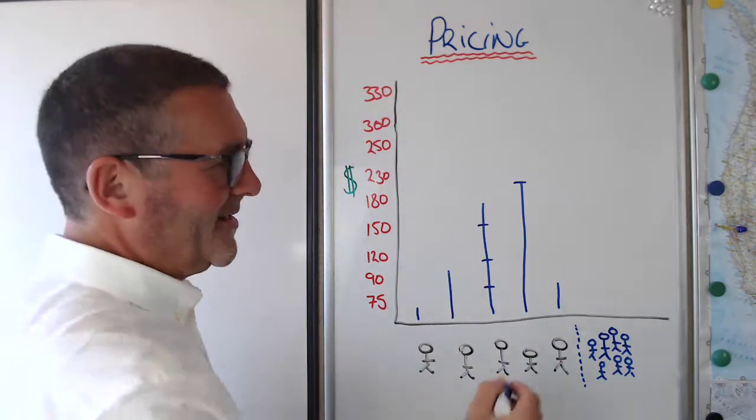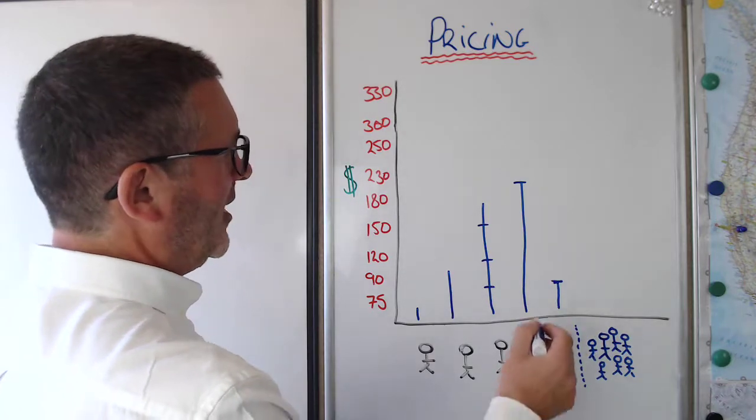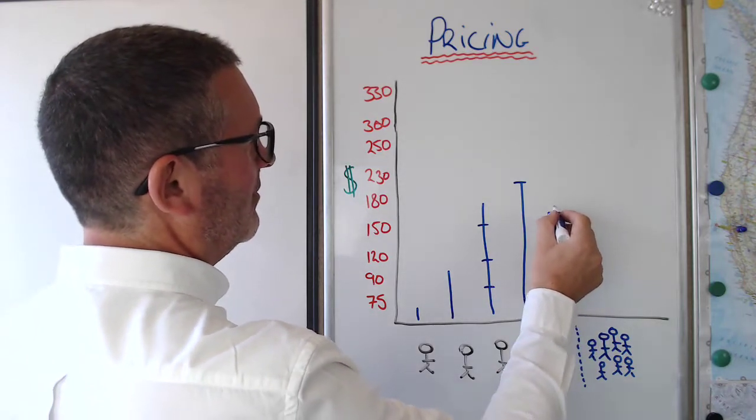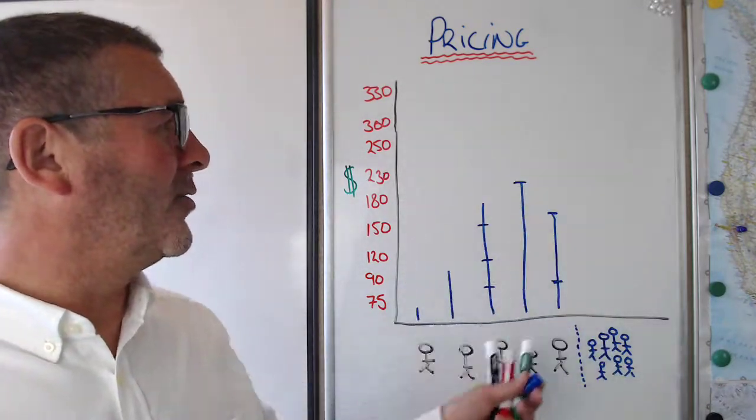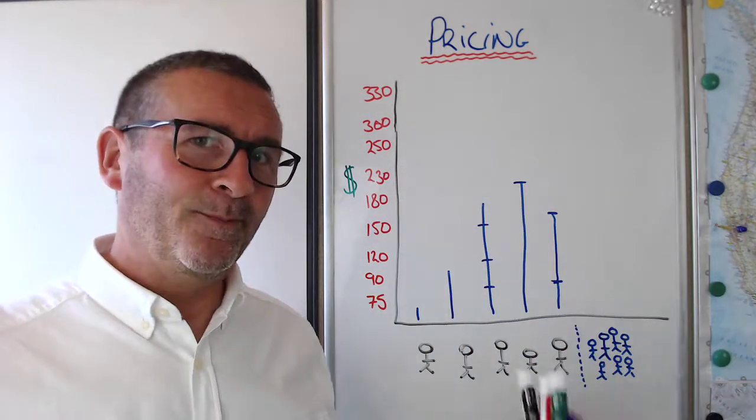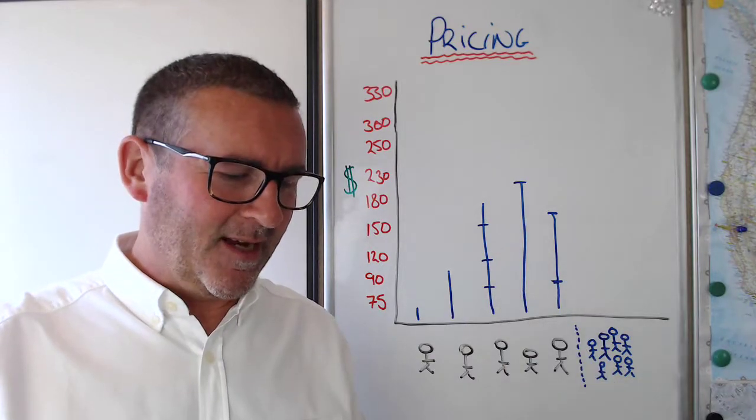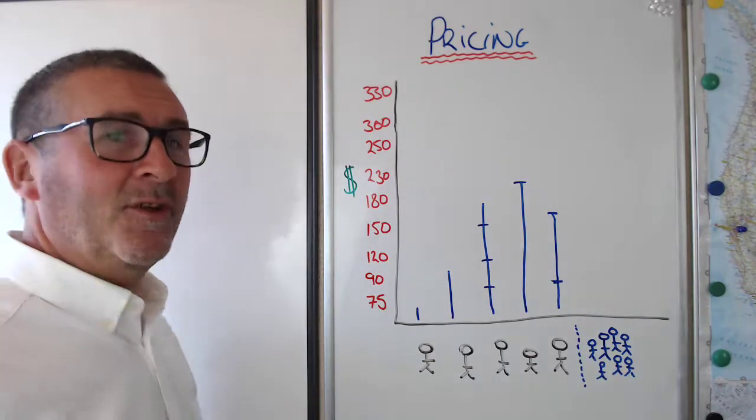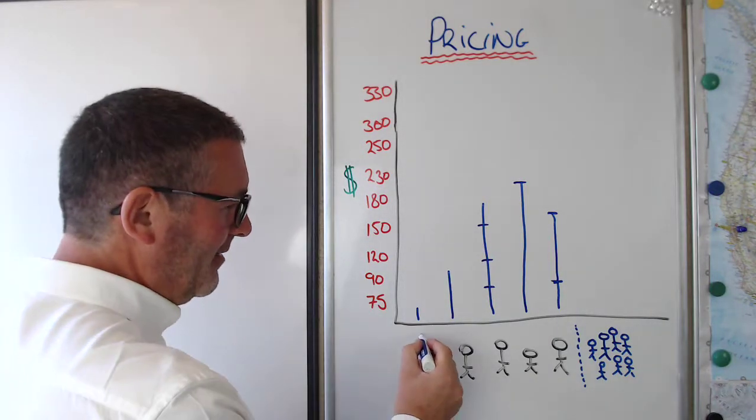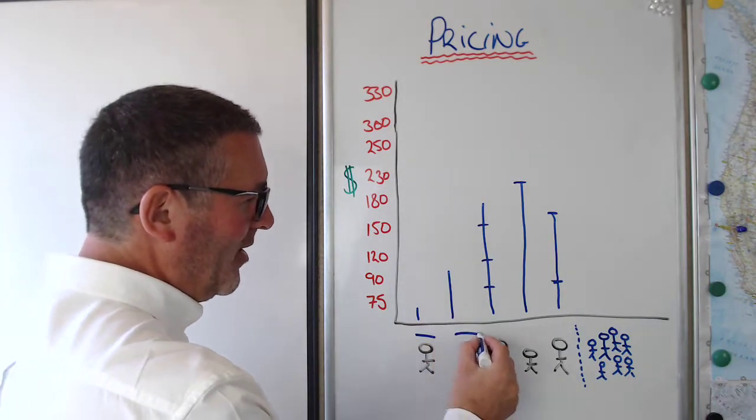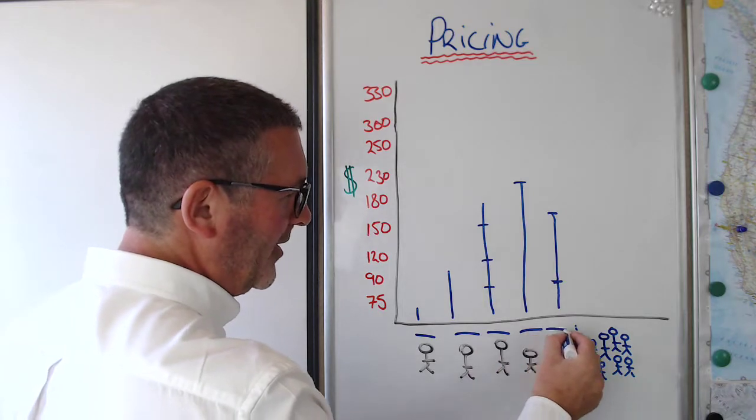This guy on $90 put his price up to $180, $100 straight away on his price because he worked out, he saw what was going on. Now, this is what I want you to understand. These people here, which is you, you are putting a ceiling, and that is a little ceiling, on your pricing.